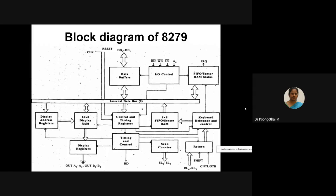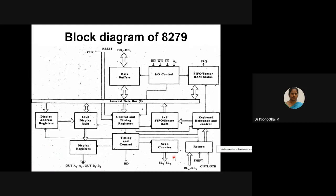There are eight return lines connected to the columns of your keyboard matrix. In the scan section, the scan counter uses SL0 to SL3 lines, which can be decoded by a 4-to-16 decoder to generate 16 lines for scanning. In the display section, we have eight output lines divided into two groups: A0 to A3 and B0 to B3. These are used as groups of four lines in conjunction with scan lines for multiplexed display.